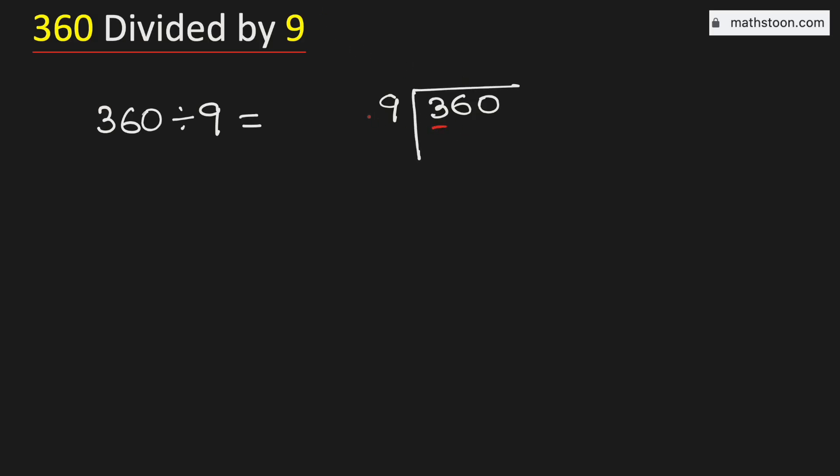See that 3 is less than 9, so we will consider the number 36. From the multiplication table of 9, we know that 9 times 4 is 36. Subtract, we get 0.